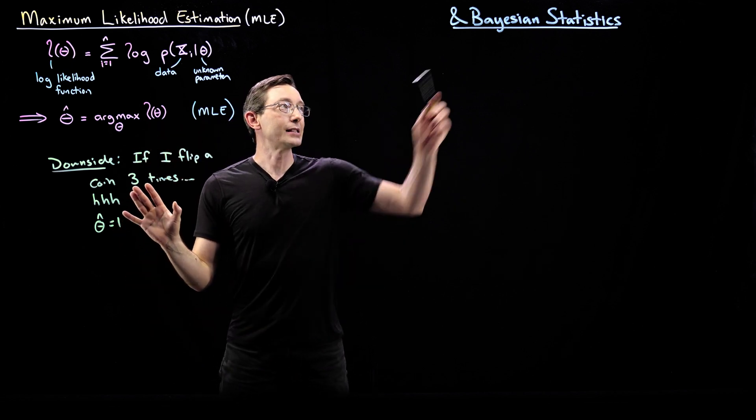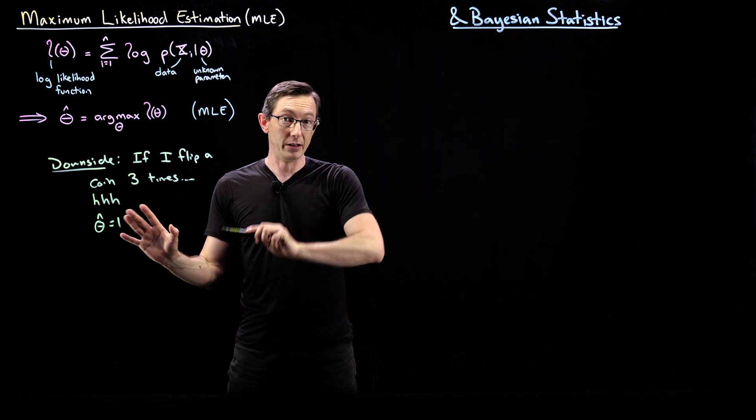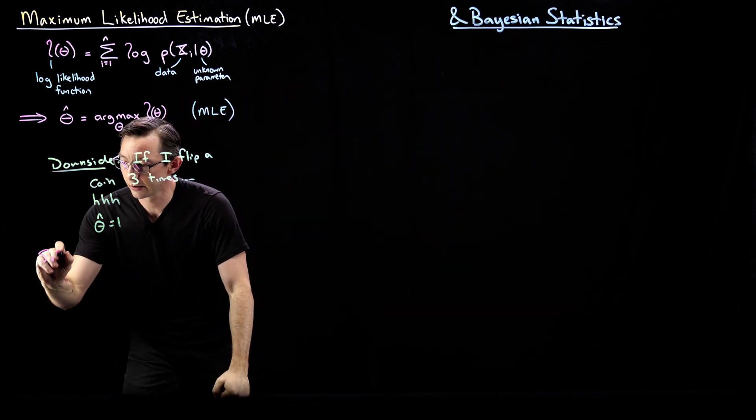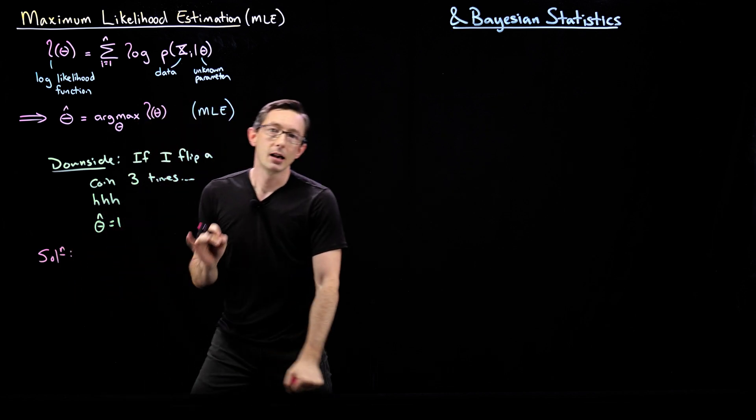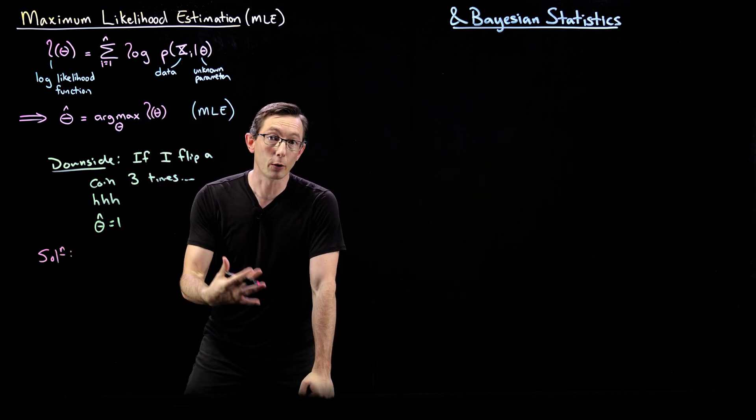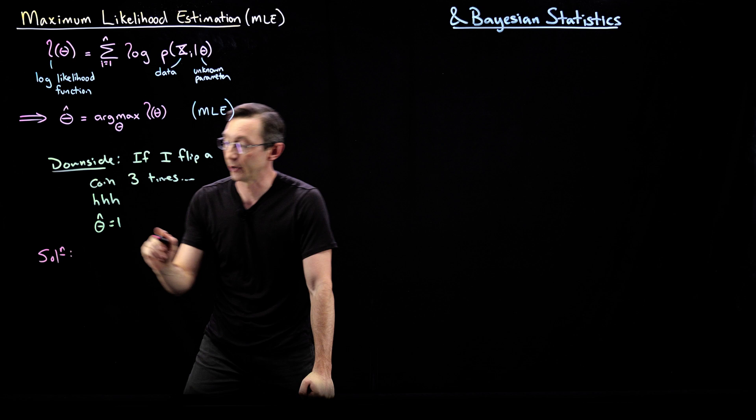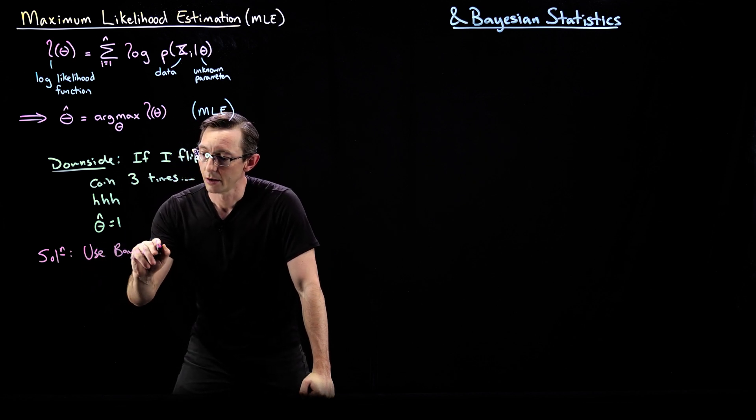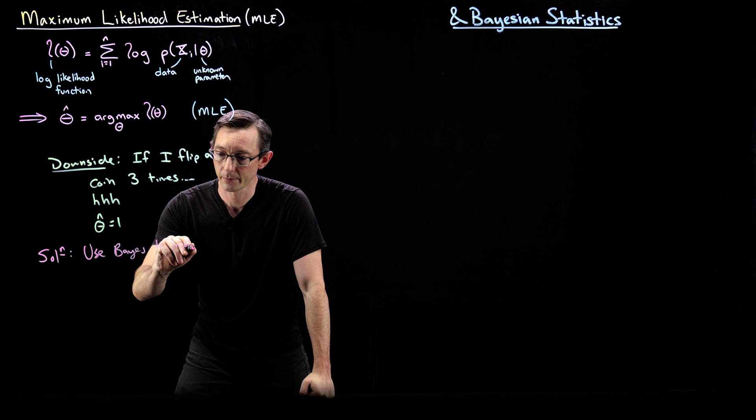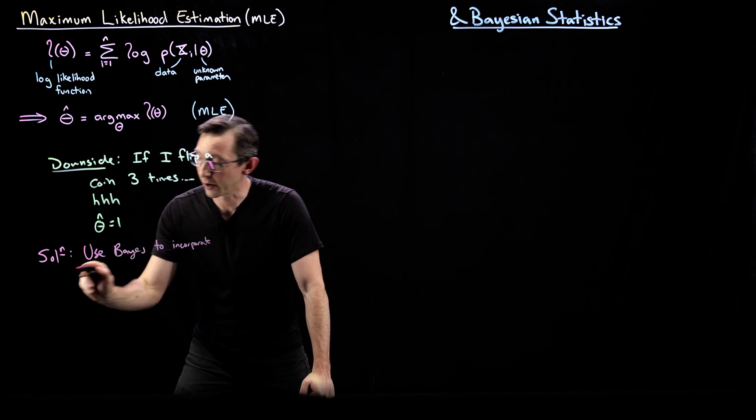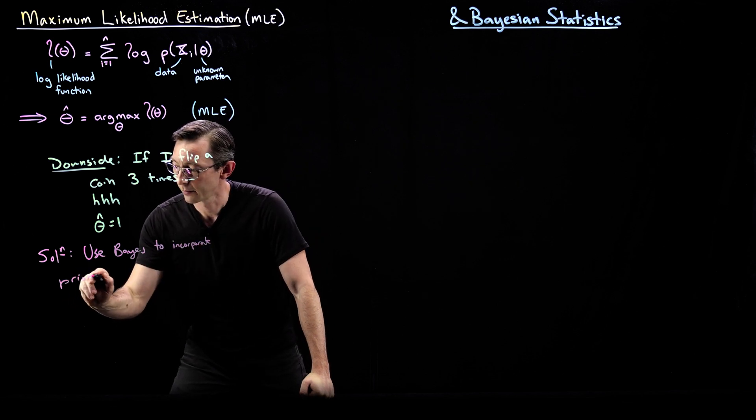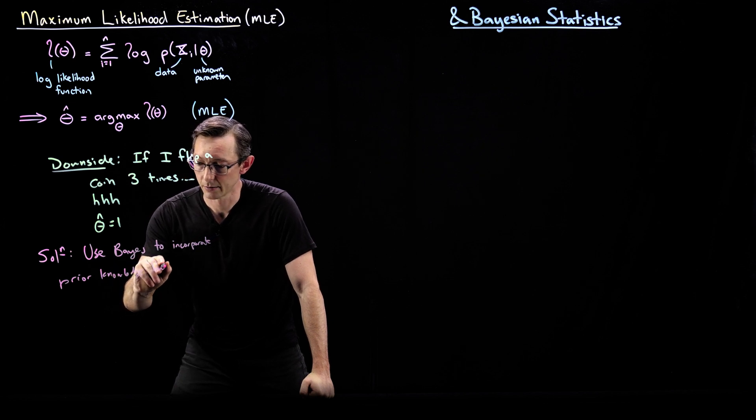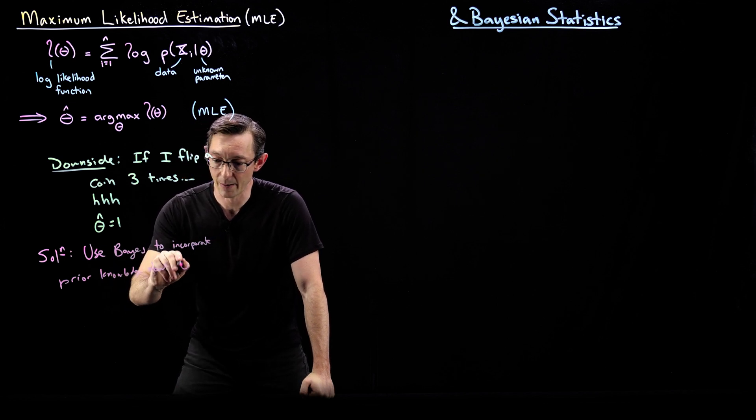And so the solution to this is using a Bayesian formulation. The solution is use Bayes' theorem to incorporate some prior knowledge about the parameter. Use Bayes to incorporate prior knowledge about theta.